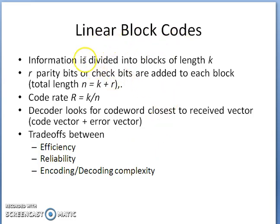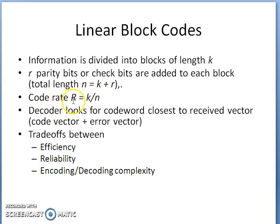In linear block codes, the given information is divided into blocks of length k. To each block of length k, r parity bits are added, making the total code word length n = k + r, where k is the message length and r is the number of check bits. The code rate is k/n. The decoder looks for the codeword closest to the received vector, which is the code vector plus the error vector.